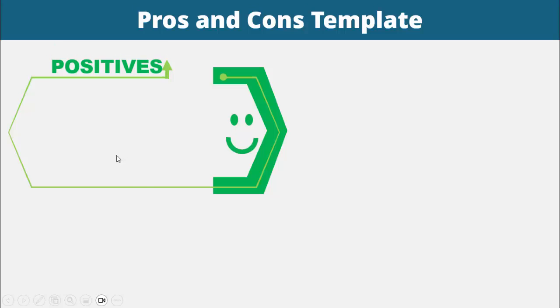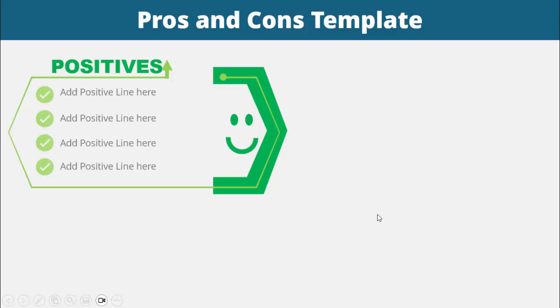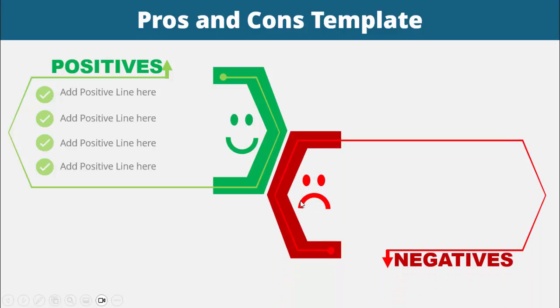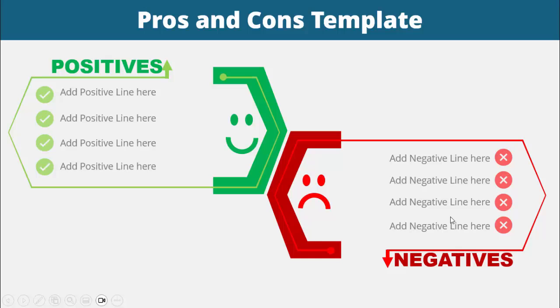In today's tutorial I'm going to show you how to create a pros and cons template in PowerPoint. When I click it will show the positive sides — I've added a smiley face — and when I click it will show the first, second, third, and fourth positive lines. When I click it will show the negatives, with a sad or angry face, and then the negative options.